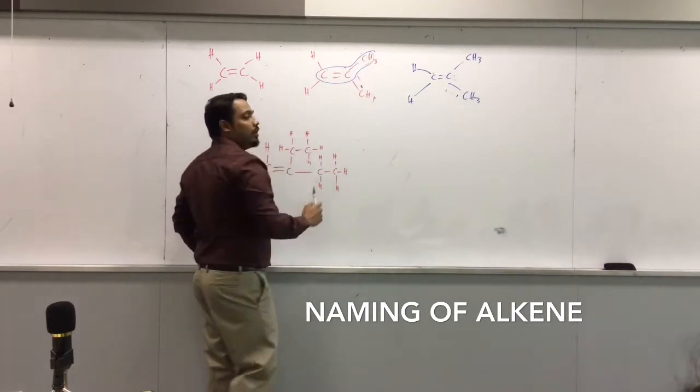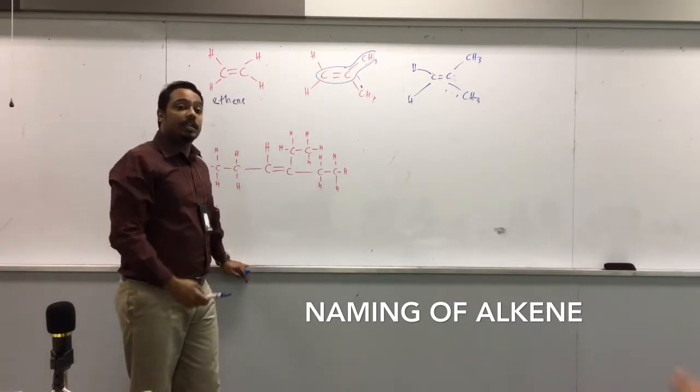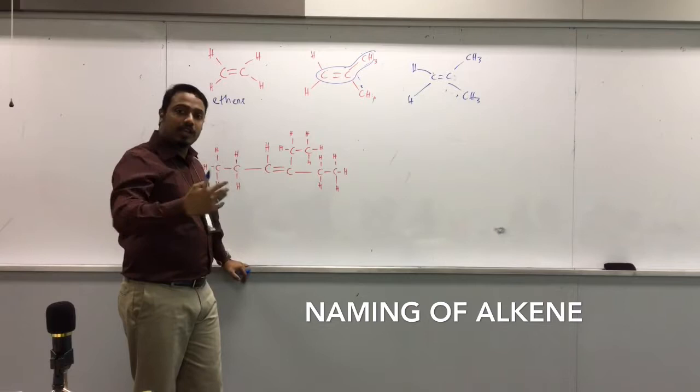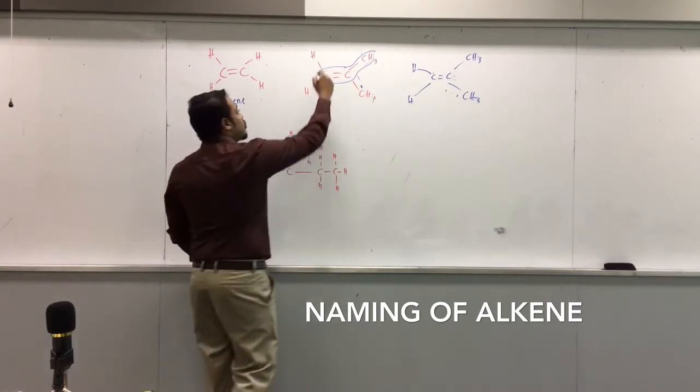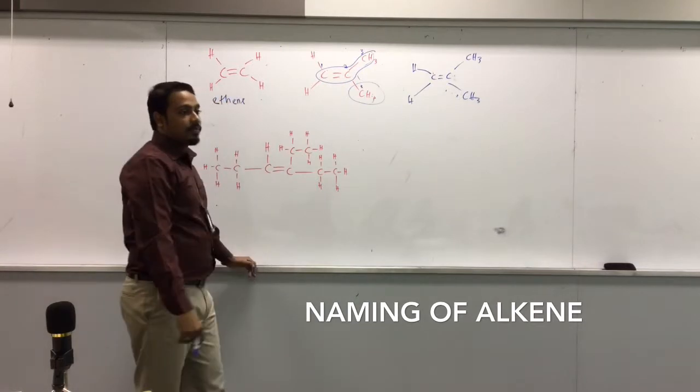So this has to be your longest chain. So now I count one, two, three, or one, two, three. Which one will I, which one I can take? Or I have to? Yes, because the double bond has to get the smallest number possible. So carbon number one, carbon number two, carbon number three. This becomes a side chain.